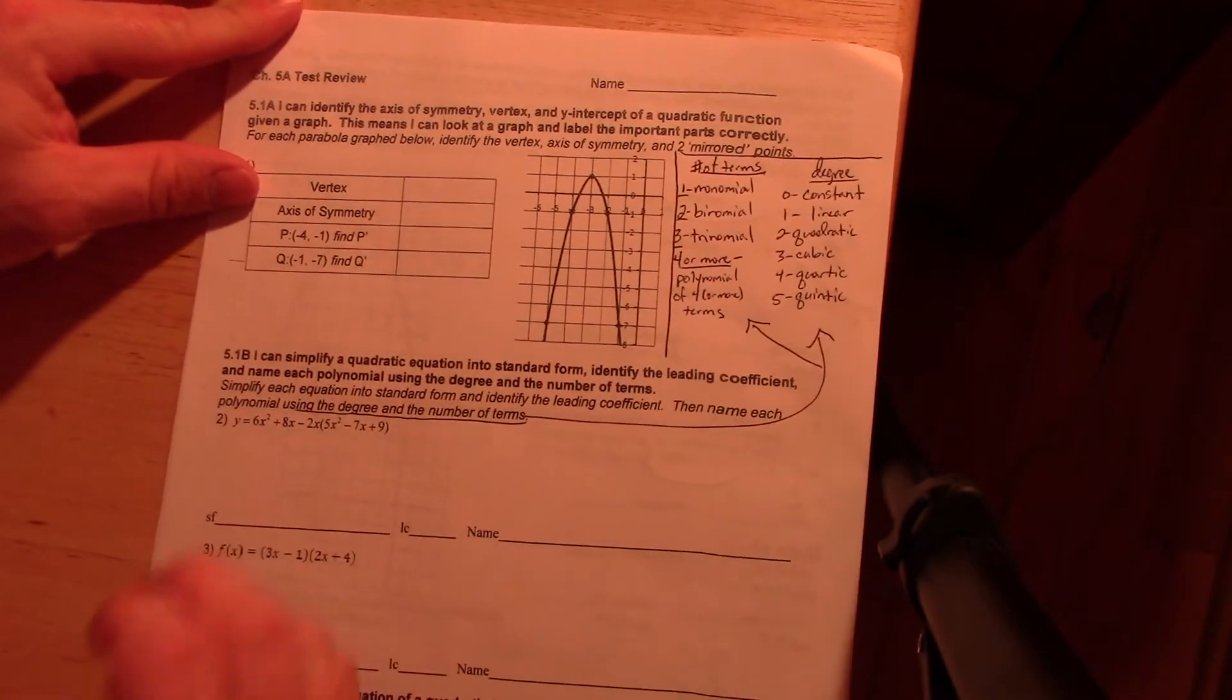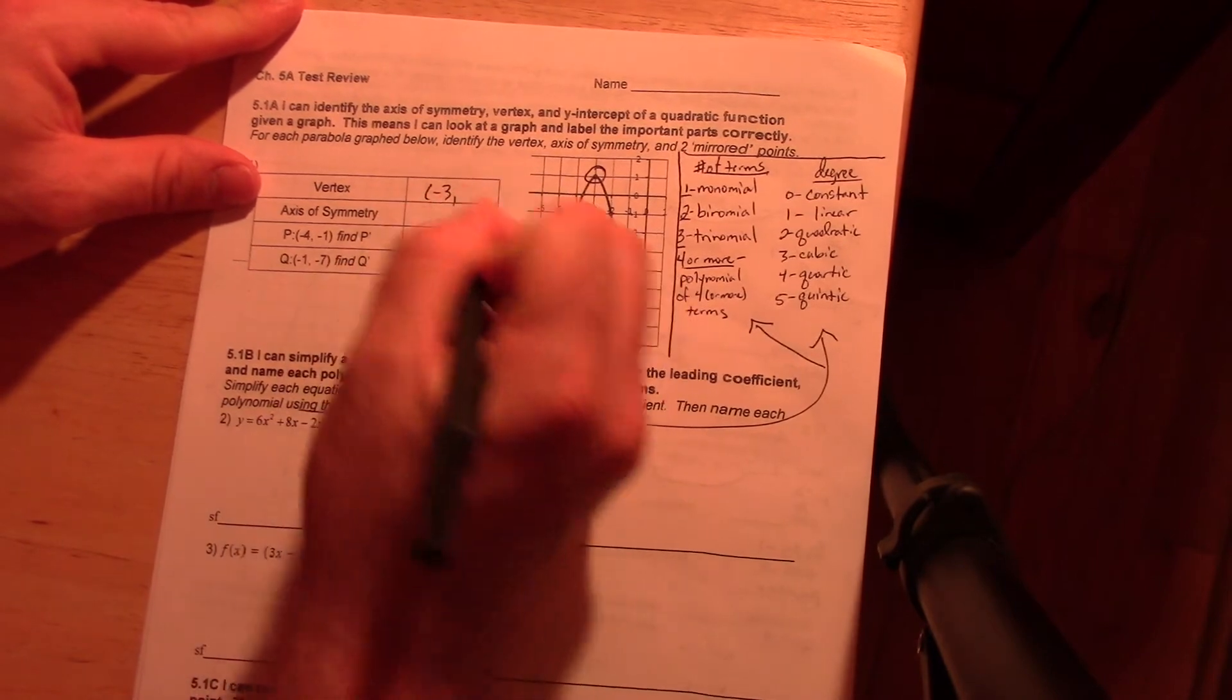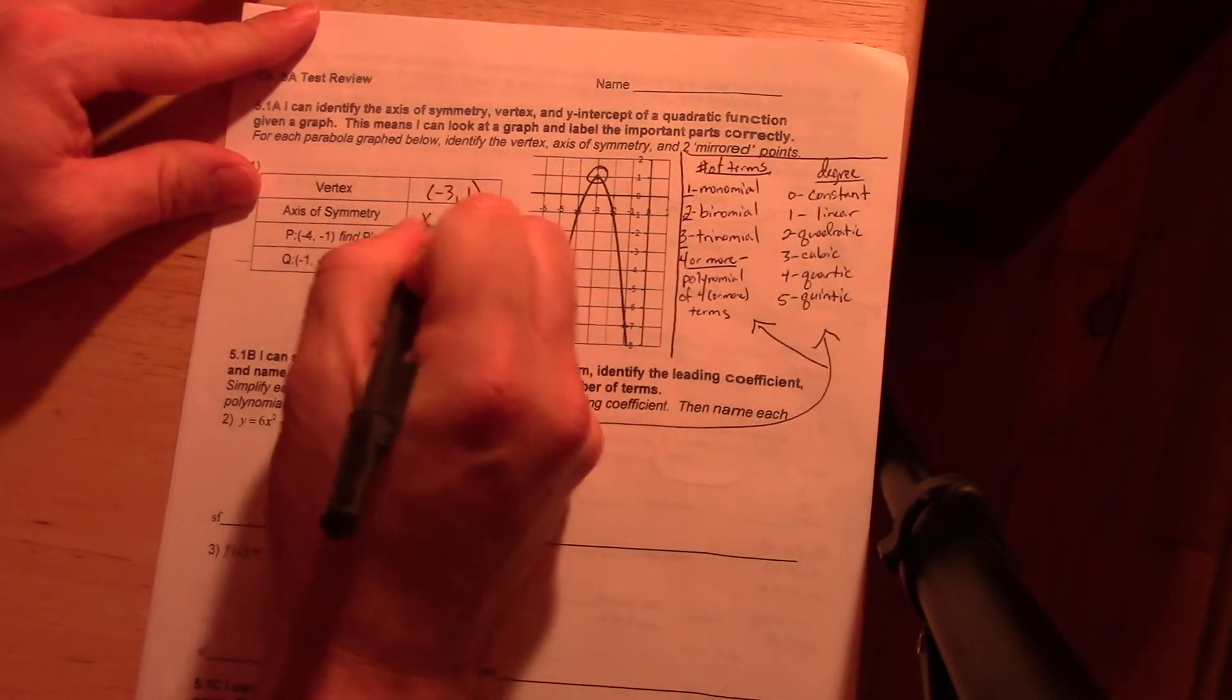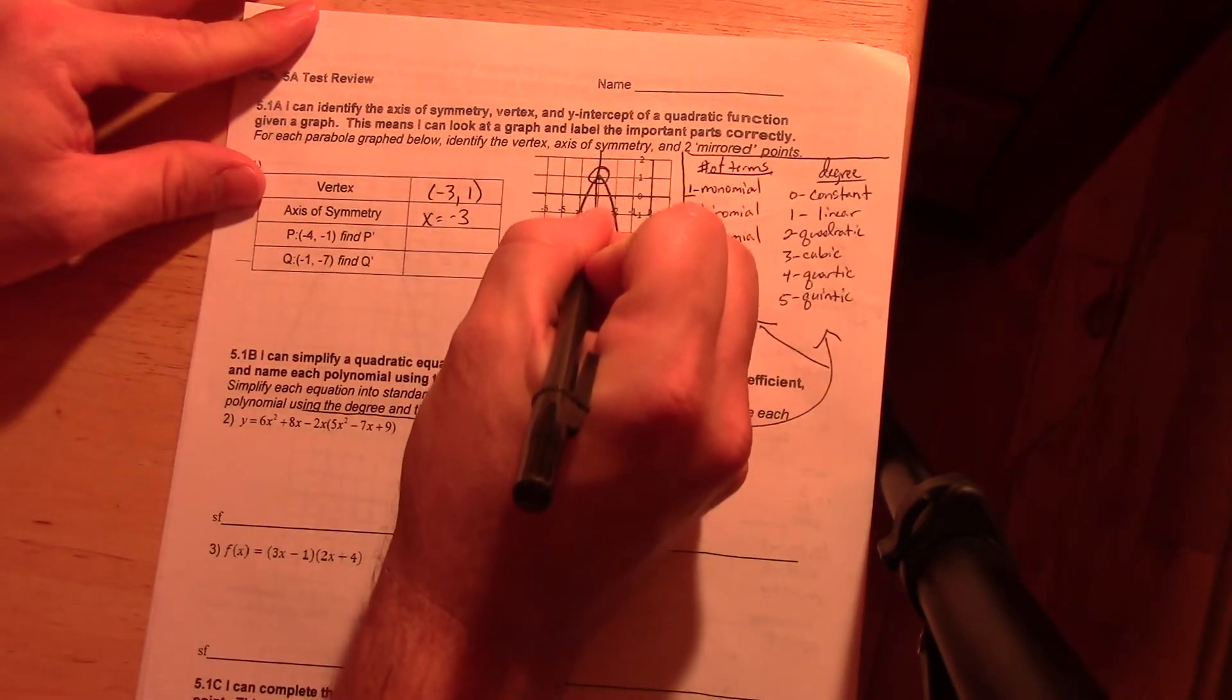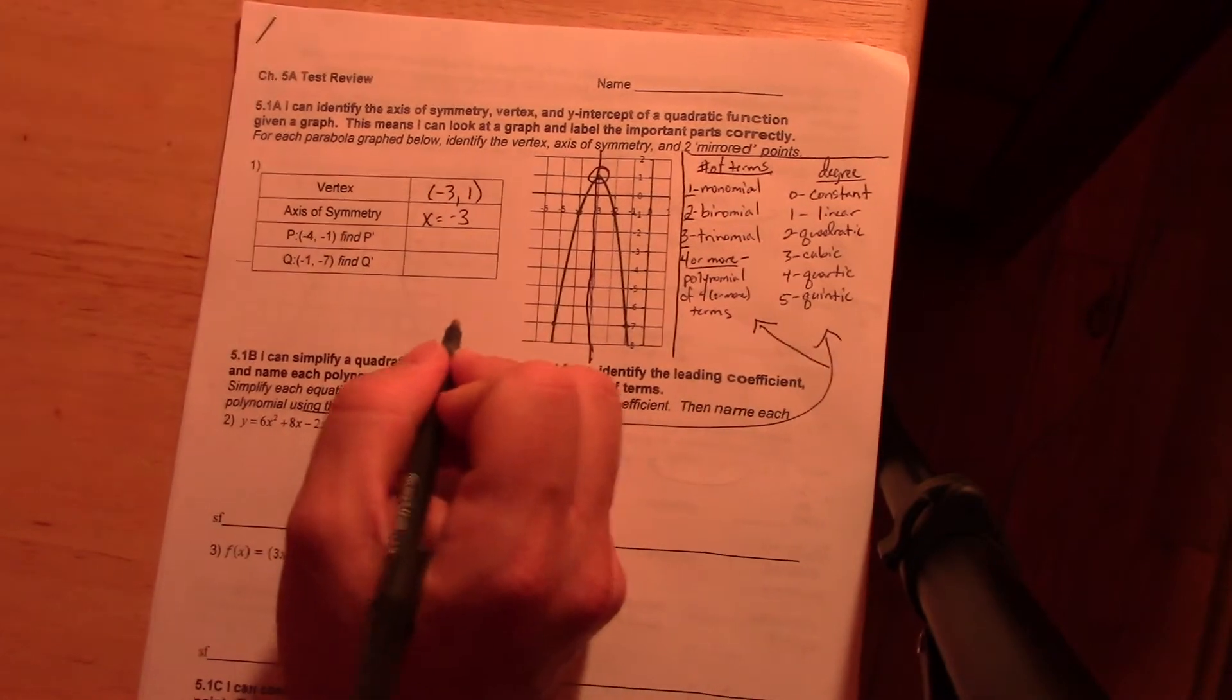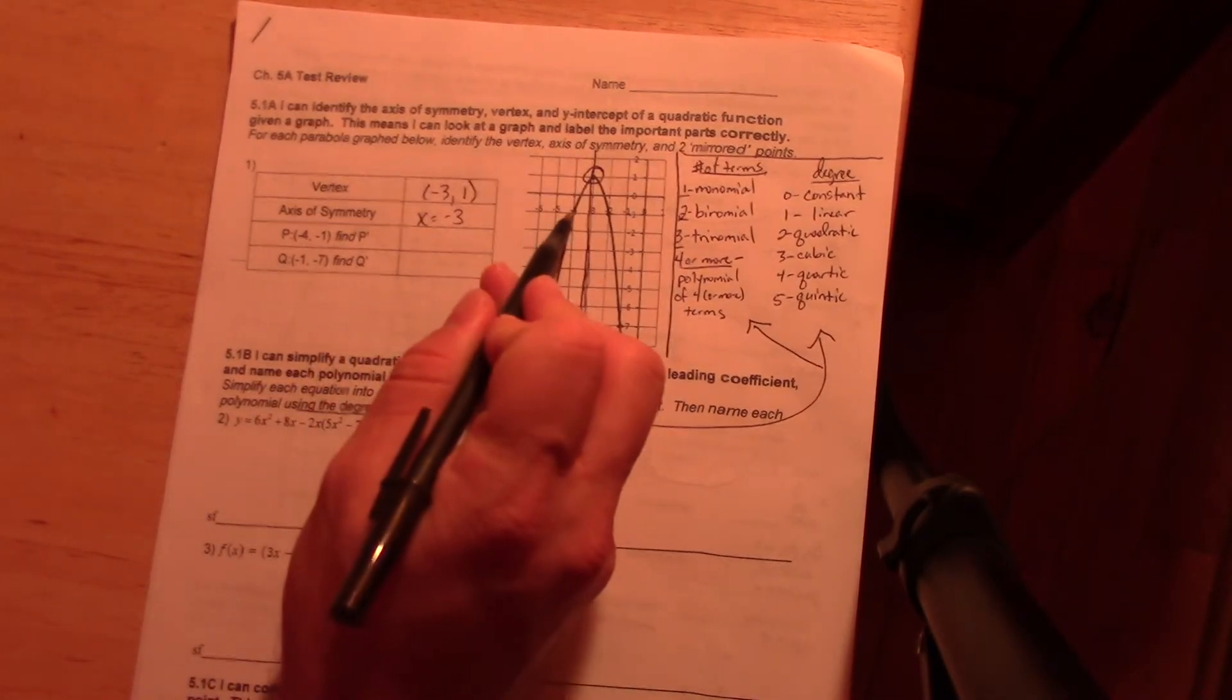On to page one here, the vertex for this should be really easy because I can just identify that point as negative three, one. Okay? My axis of symmetry is always, always, always what that is and if you need to, you can draw a line here. Sorry, I am not very good at drawing lines apparently. But you can see that that goes through that point where it reflects in each of these points.